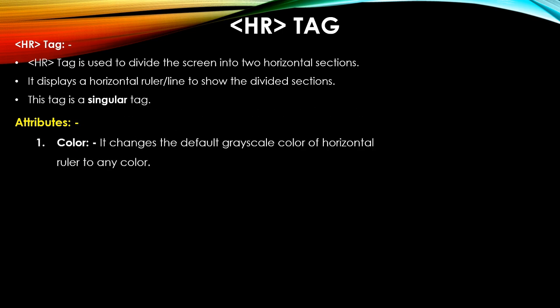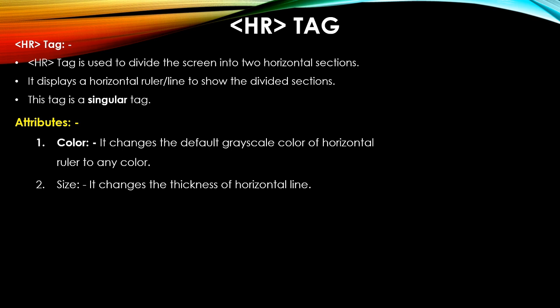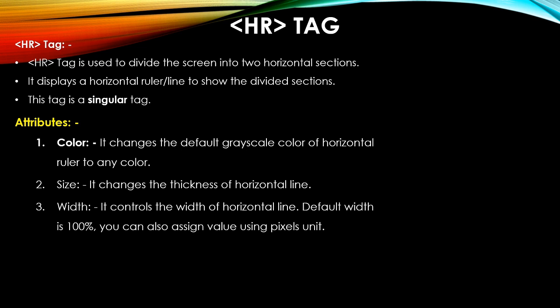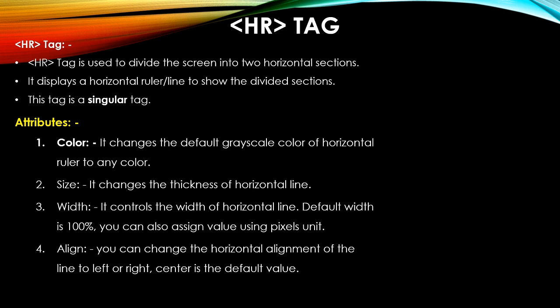The color attribute of hr changes the default color of the horizontal line — the default is grayscale. The size attribute controls the thickness of the horizontal line, given in pixels. The width attribute controls the width; the default width is 100 percent. You can decrease it using percent or pixel values.